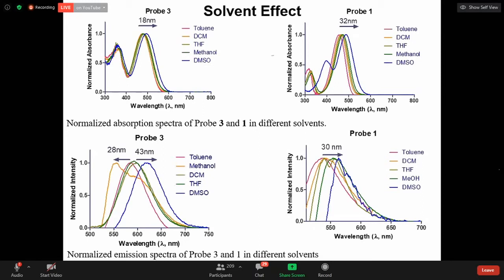We are checking with the solvents. You can see the solvents with different polarity. So when we increase the polarity, the fluorescence as well as absorption has been redshifted. So from this redshift we came to know it shows ICT intramolecular charge transfer.